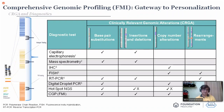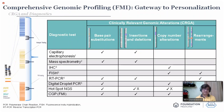But if you have comprehensive genomic profiling by FMI, you will be able to look into base pair substitutions, insertions, deletions, copy number alterations, and also rearrangements — all four are covered with comprehensive genomic profiling, not just a hotspot NGS.